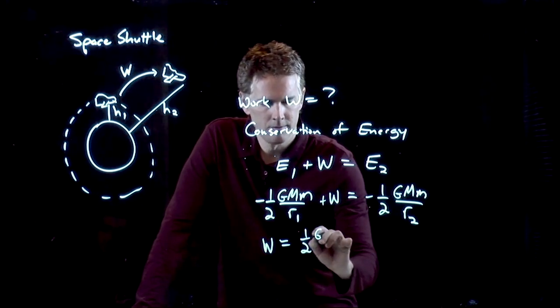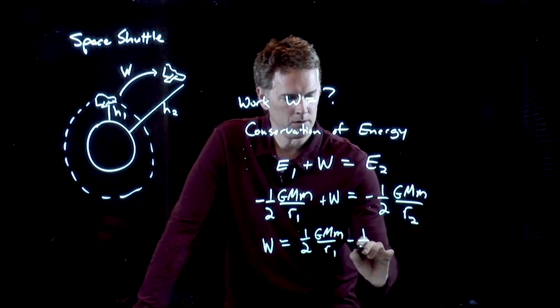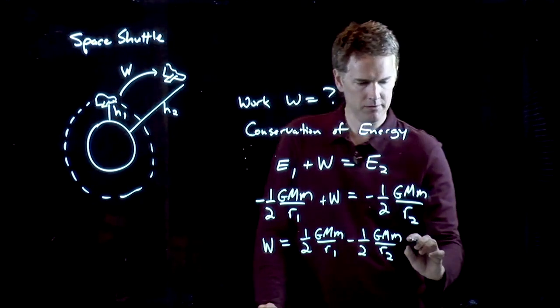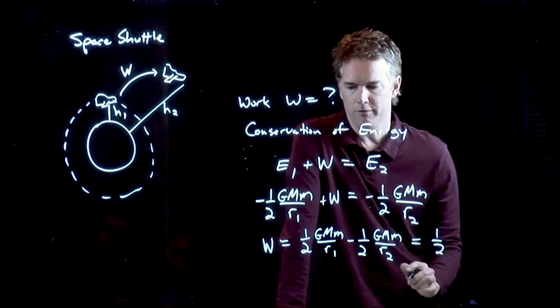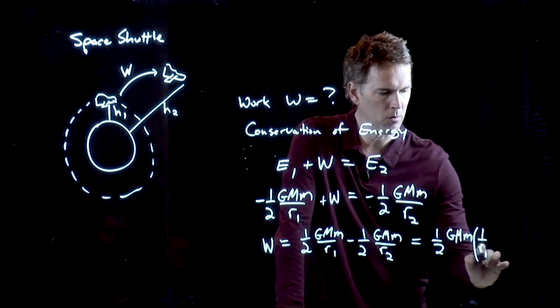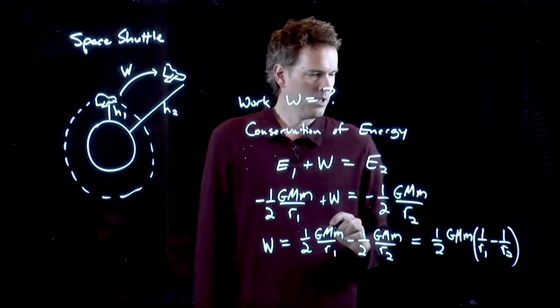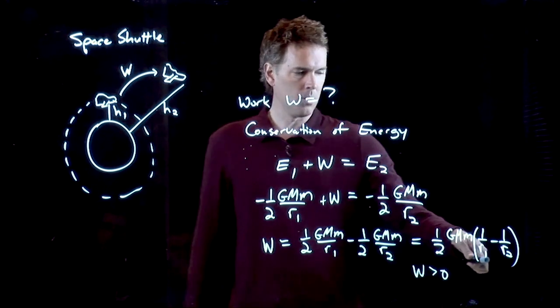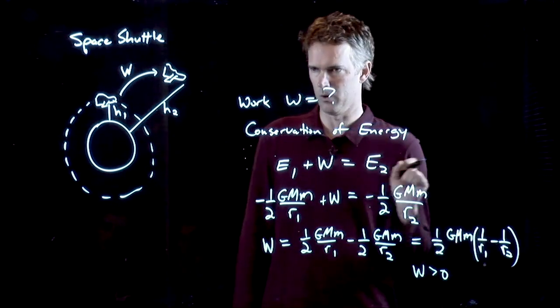So I get 1/2 GMm over r2. I have some common factors there, and so I can pull out a 1/2 out in front, a GMM, and then I have 1 over R1 minus 1 over R2. This is a positive number. Why? Because R1 is smaller than R2, which means that 1 over R1 is bigger than 1 over R2.